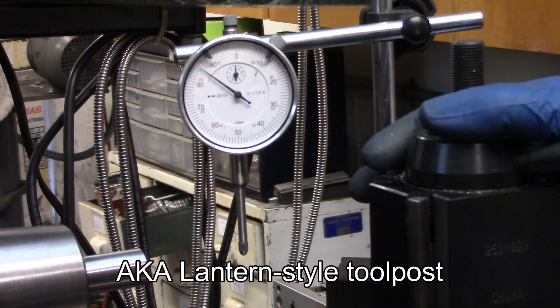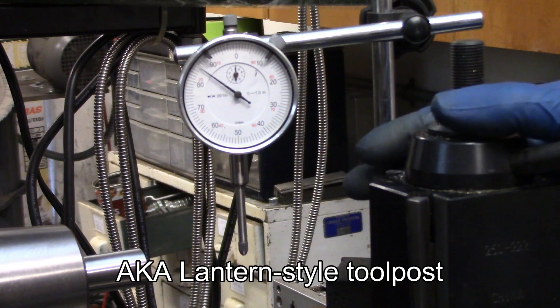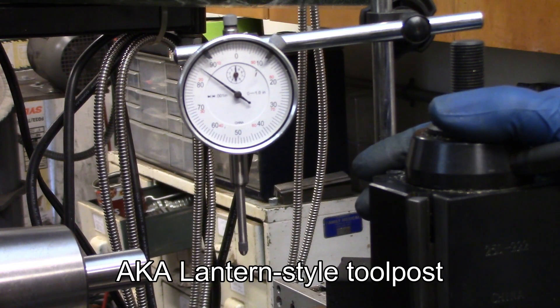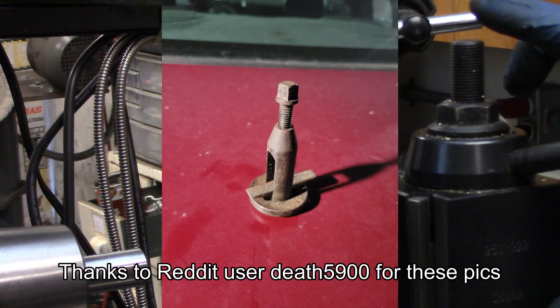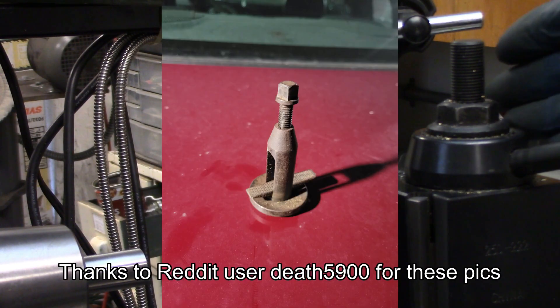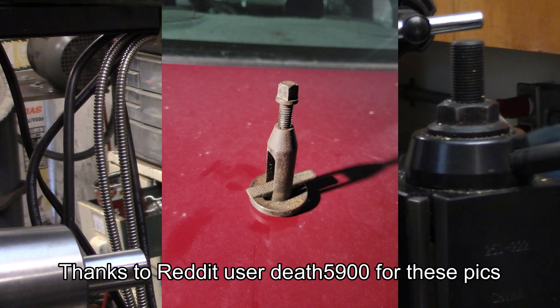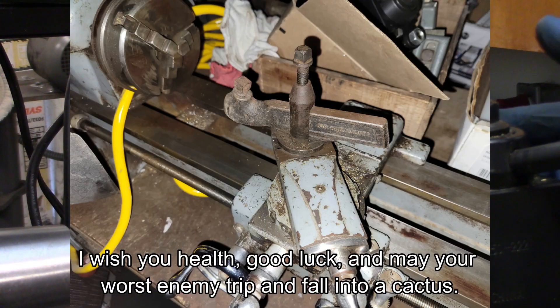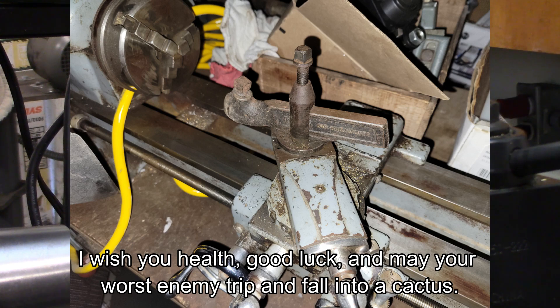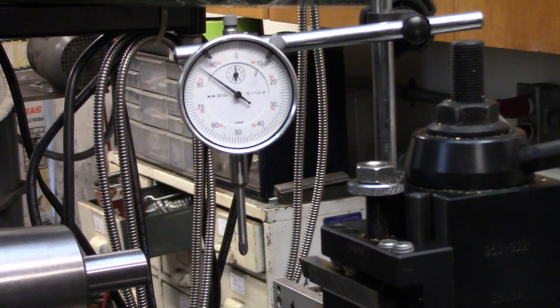There's also the rocker style tool posts, but those aren't nearly as common as they used to be. There's zero repeatability. Those are the ones that look like a cylinder with a slot cut through the middle. And a lot of times there's a half-moon shaped rocker down at the bottom, which gives it its name. Every time you loosen that tool post, you lose your center height. So there's no repeatability whatsoever. Let's get back to the testing.